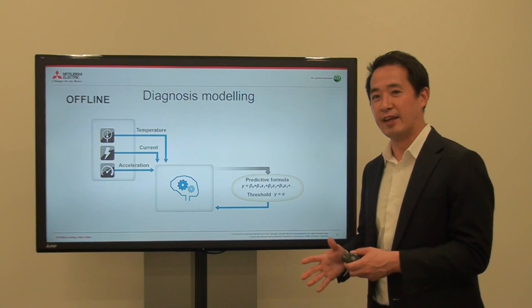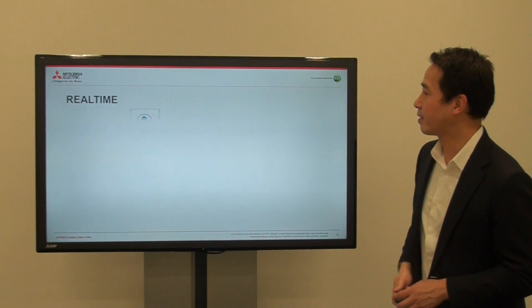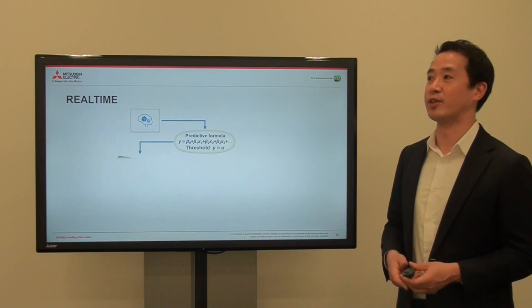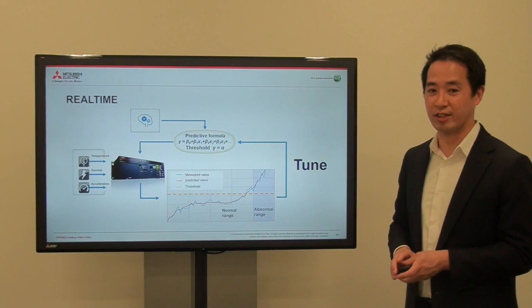The threshold means: if the gear wear rises to a certain level, we want to send out an alarm to alert the worker to stop the machine. So we create both the predictive formula and the threshold, and we actually take this predictive formula and test if it works. We put this in the actual machine, put it in an edge computer, collect the actual data, and then produce the chart.